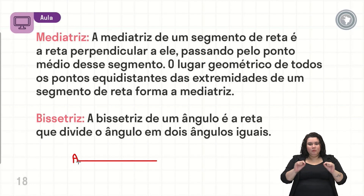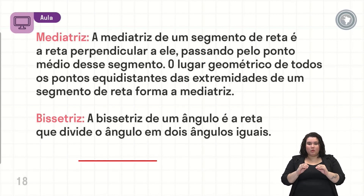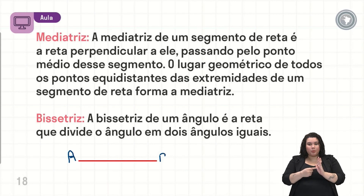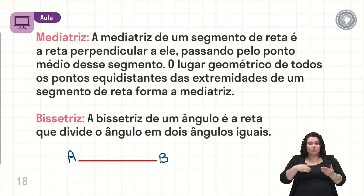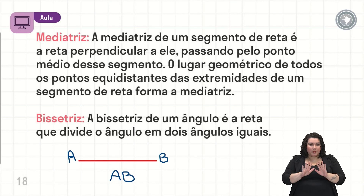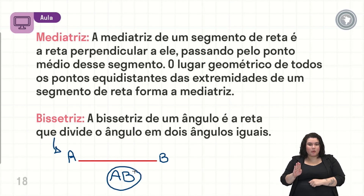Na extremidade dele, nós temos esse ponto. O ponto eu denomino com letra maiúscula. Na extremidade tem um ponto — que é o início desse segmento, ou o final, depende — ponto A. E nós temos aqui na outra extremidade um outro ponto, ponto B. Quando eu falo em um segmento de reta, nós temos aqui o segmento AB. Em muitos livros é colocado um símbolo quando se fala de segmento de reta, mas aqui nós não vamos utilizar esse símbolo. A gente já sabe que isso aqui é o segmento AB.